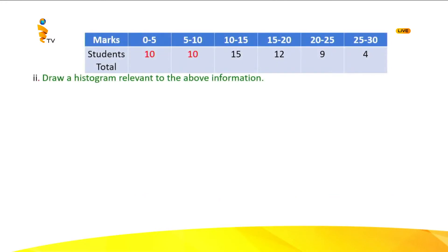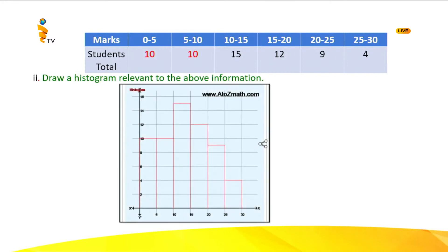The second question is: draw a histogram relevant to the above information. When you draw the histogram, it is something like a bar or column graph that you have learnt in grade 7, but here there are no gaps between the columns. You take the class intervals on the x-axis and the number of students on the y-axis, and draw the columns with heights corresponding to the number of students. This will be the graph I have drawn.